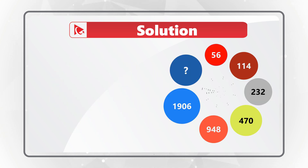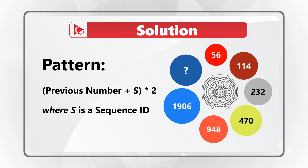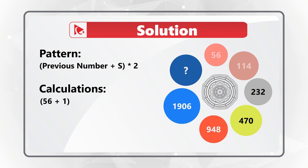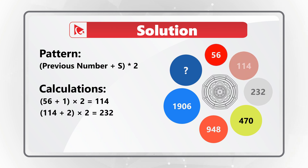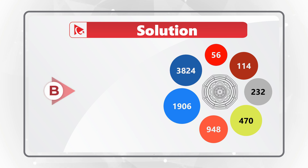The pattern here is: previous number plus the sequence number, multiplied by 2. You have to add the previous number to the sequence number before doing the multiplication. The first number is 56; add 1, multiply by 2 — 57 × 2 = 114. Then 114 plus 2, multiplied by 2 — 116 × 2 = 232. So our final number: 1906 plus 6, multiplied by 2 — 1912 × 2 = 3824.